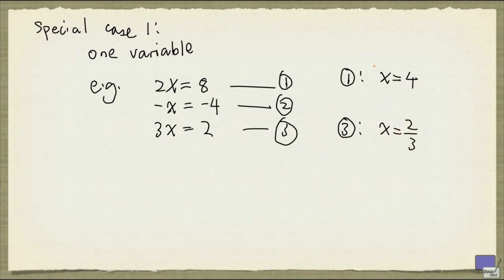Clearly, x cannot be 4 and 2 thirds at the same time. So there's no solution. And in general, if we have a system that has only one variable, it's not that difficult to solve.